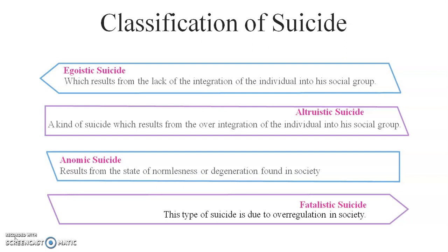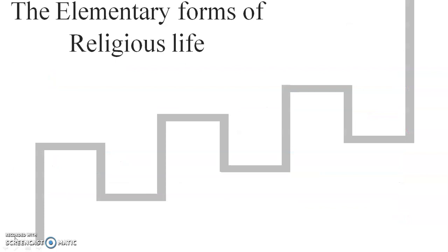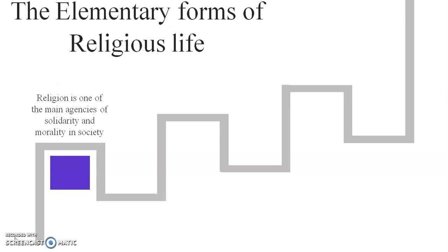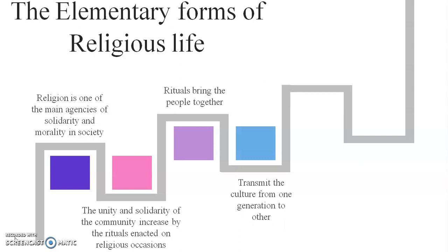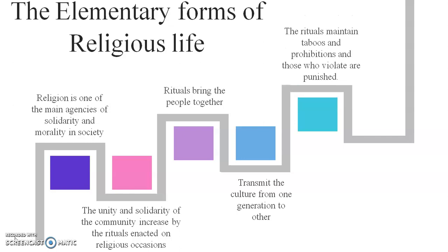The last contribution of Emile Durkheim is 'The Elementary Forms of Religious Life' (1912), in which Durkheim analyzes collective or group forces through the study of religion. According to him, religion is one of the main agencies of solidarity and morality in society. Unity and solidarity of the community are increased by rituals enacted on religious occasions. Rituals bring people together, help transmit culture from one generation to another, and maintain taboos and prohibitions, with transgressors being punished.